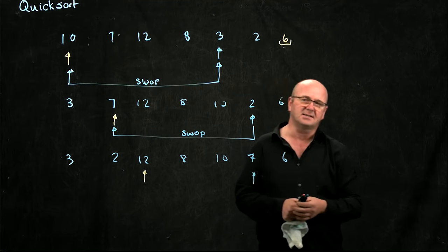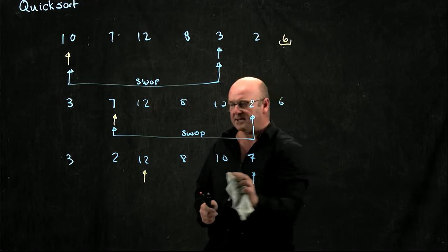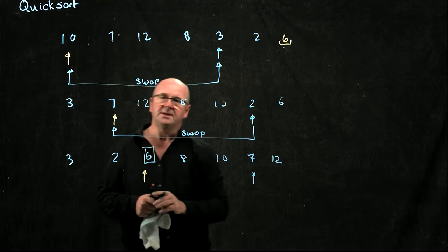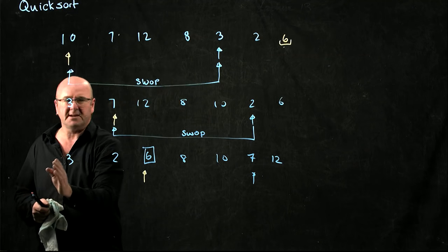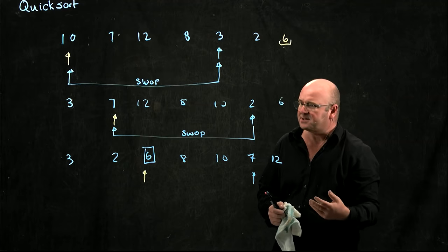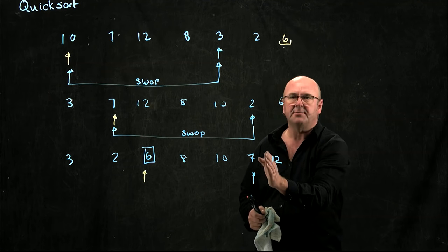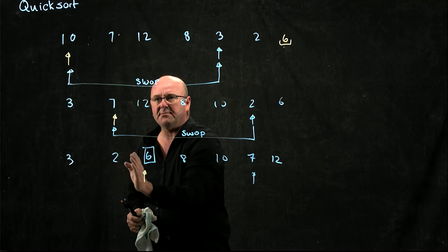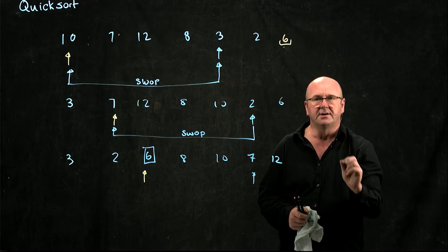We're at the last element before our pivot, so we've completely iterated through the list. The last thing we do is take our pivot point and swap it to where the counter is. We're done adjusting that pivot. Now we recurse from the beginning to the pivot minus 1, and from the pivot plus 1 to the end. It's very important that you get that plus and minus 1 correct when doing quicksort.